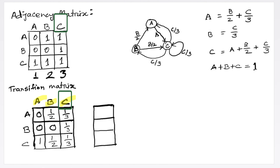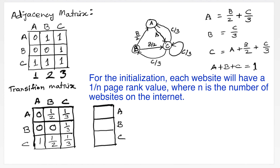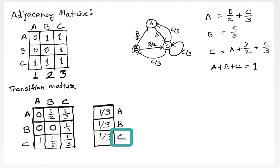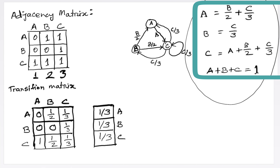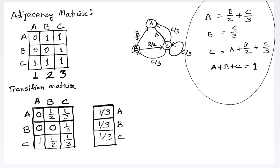The vector that contains the importance values of all websites is called a rank vector. A rank vector is a column vector where each cell represents the importance value or page rank value of a website. We have three websites A, B, and C, encoded in sequence. In the very beginning, we assume each website has the same page rank value: one-third, one-third, and one-third for A, B, and C. The summation is one.